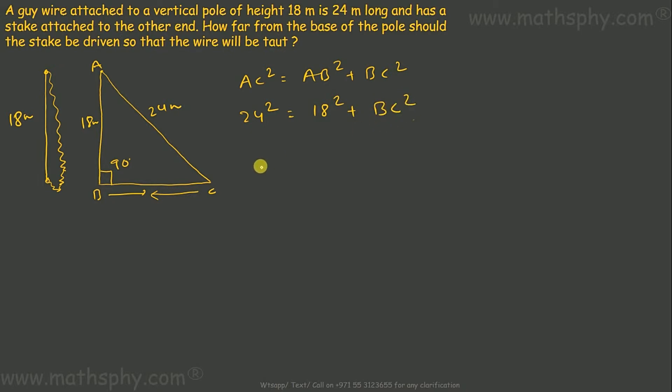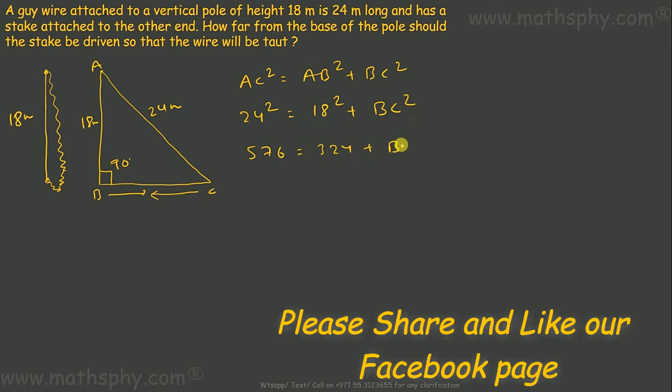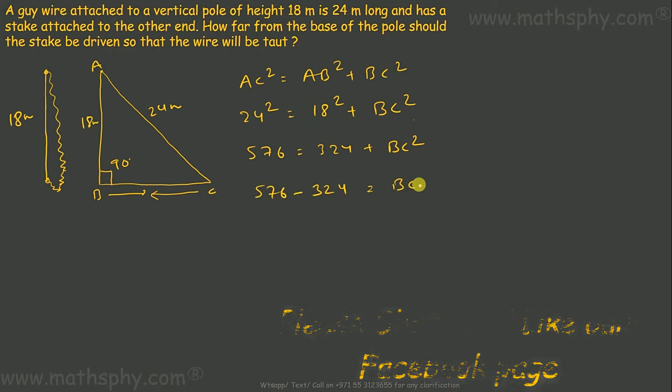So this will give you 576, and this will give you 324 plus BC square. So this will be 576 minus 324 equals to BC square. This gets you 252 equals to BC square, so BC is root 252.